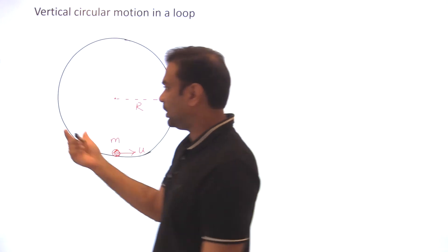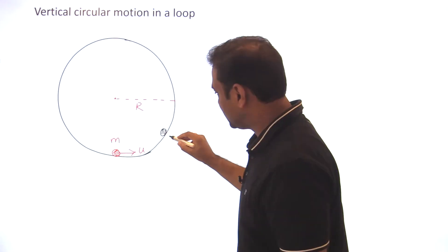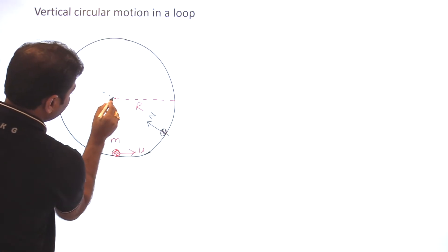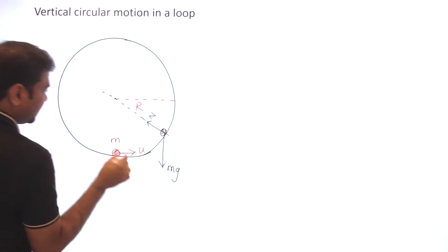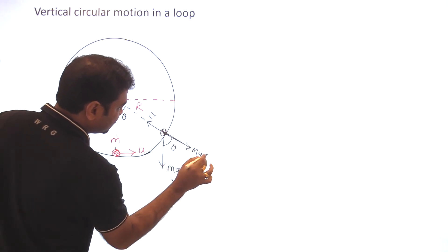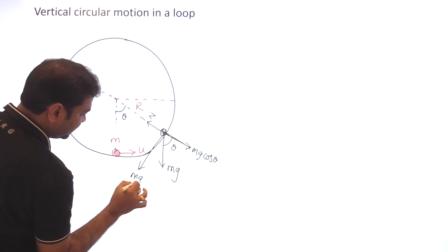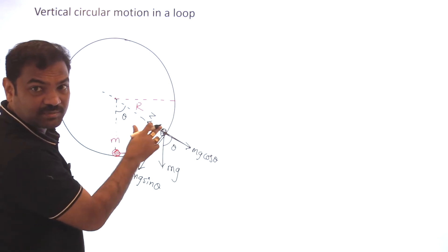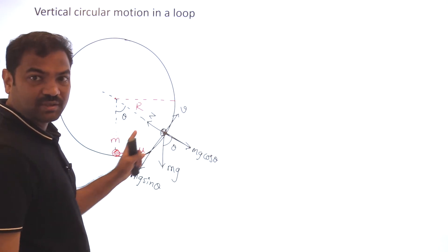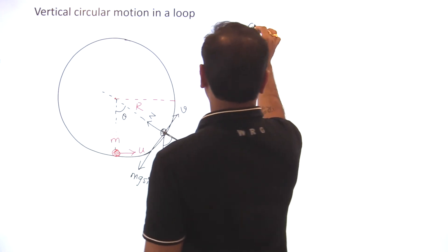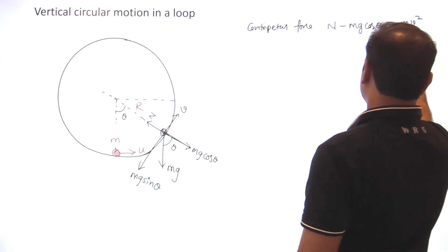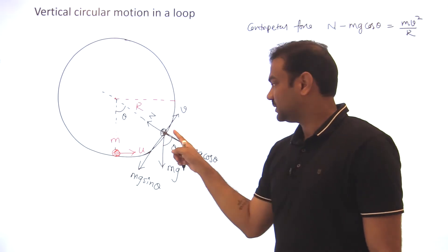What are the forces acting on this ball? Once the ball has gone to a point, there will be a normal reaction acting perpendicular to the surface — meaning normal reaction is towards the center — and mg will act downward. If it has rotated by angle theta, I can make components: mg cos theta and mg sine theta. mg sine theta will be the tangential force, mg cos theta will contribute to the normal reaction and centripetal force. Here the speed is v, and we projected with velocity u. The centripetal force: N minus mg cos theta...